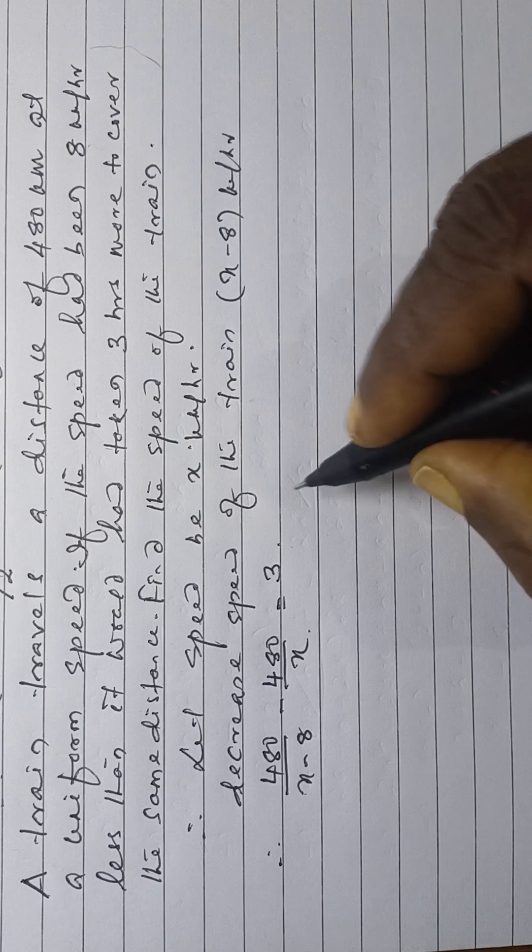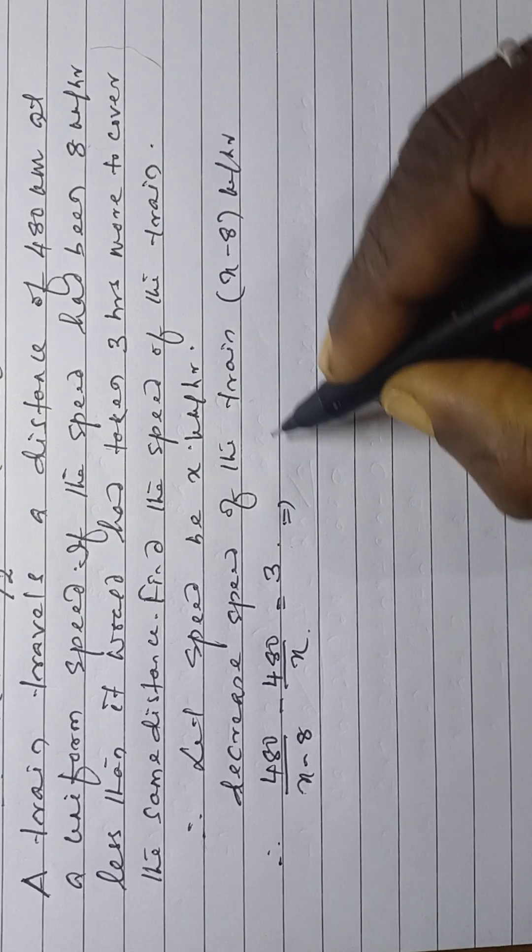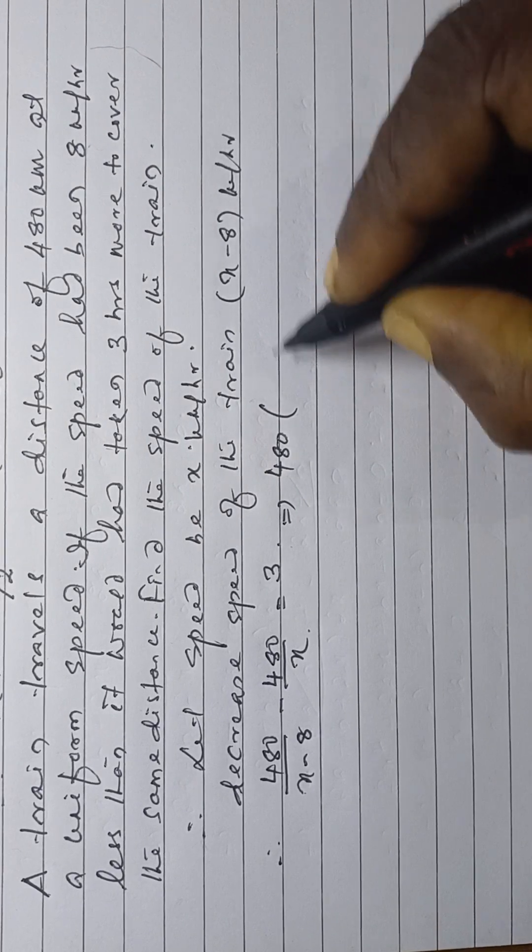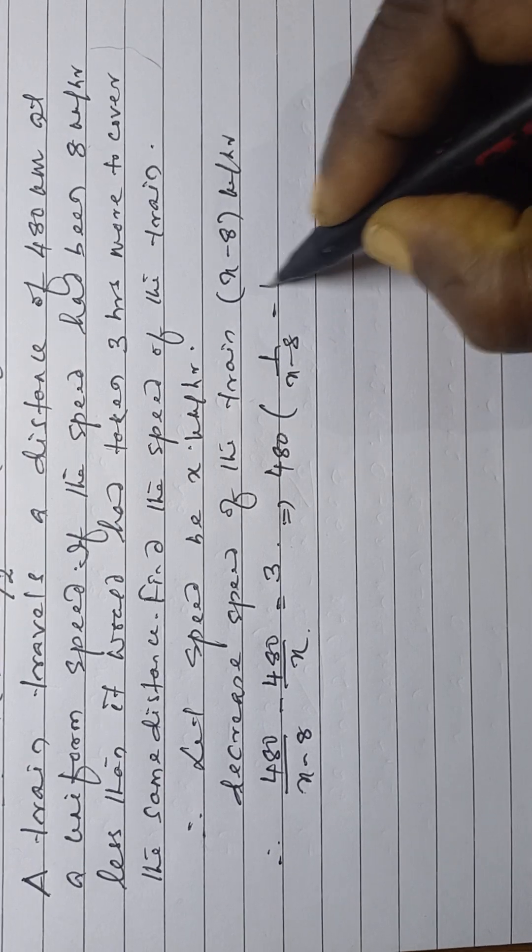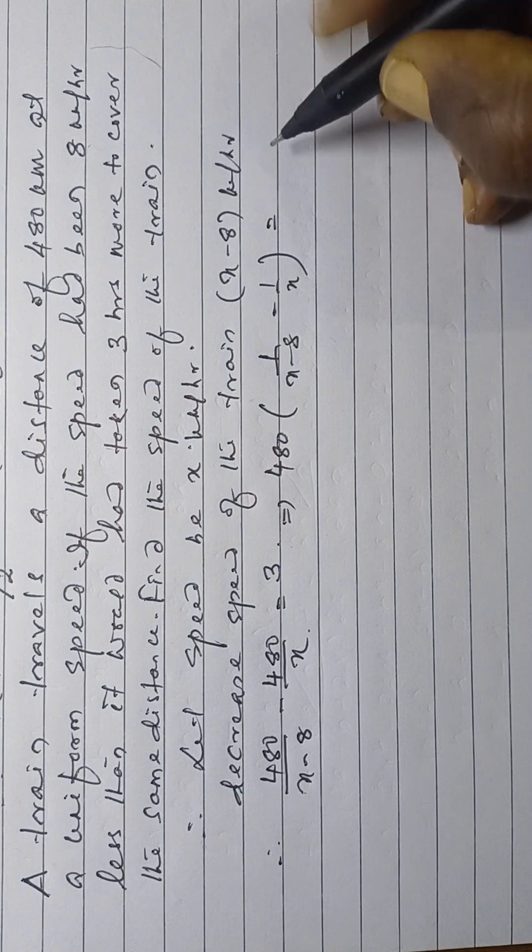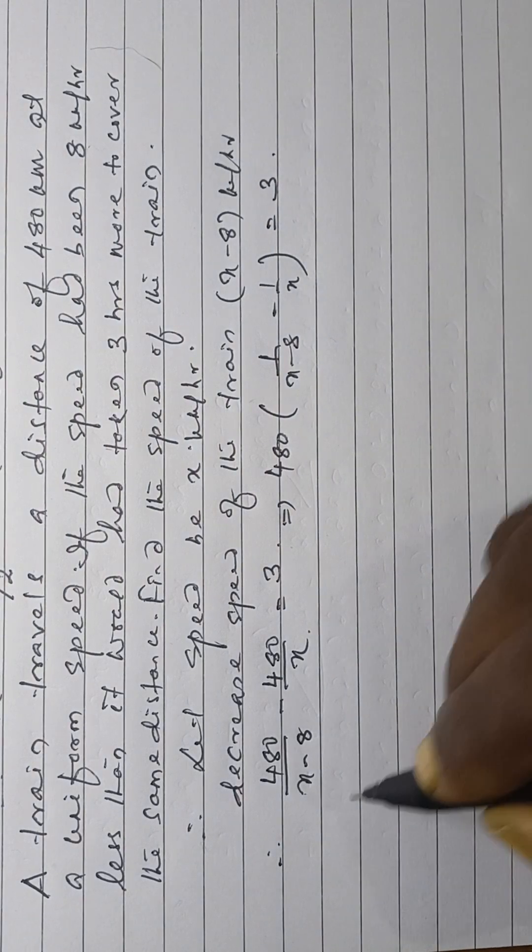Now, this is 480 is the common. Now, 1 by x minus 8 minus 1 by x is equal to 3.